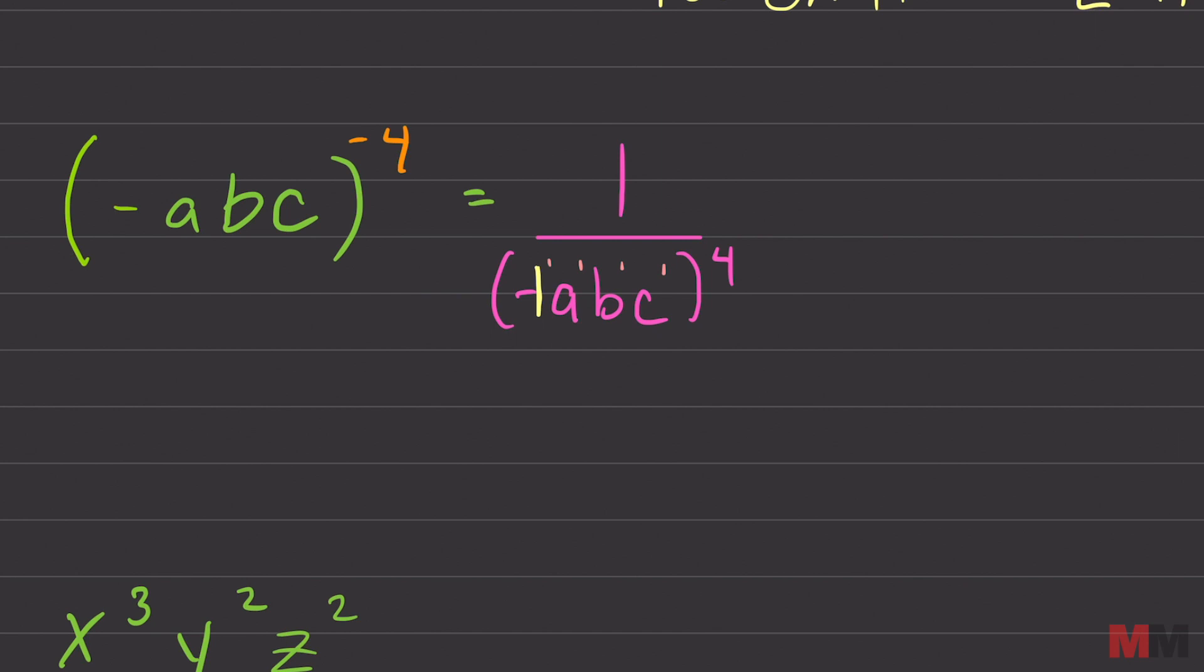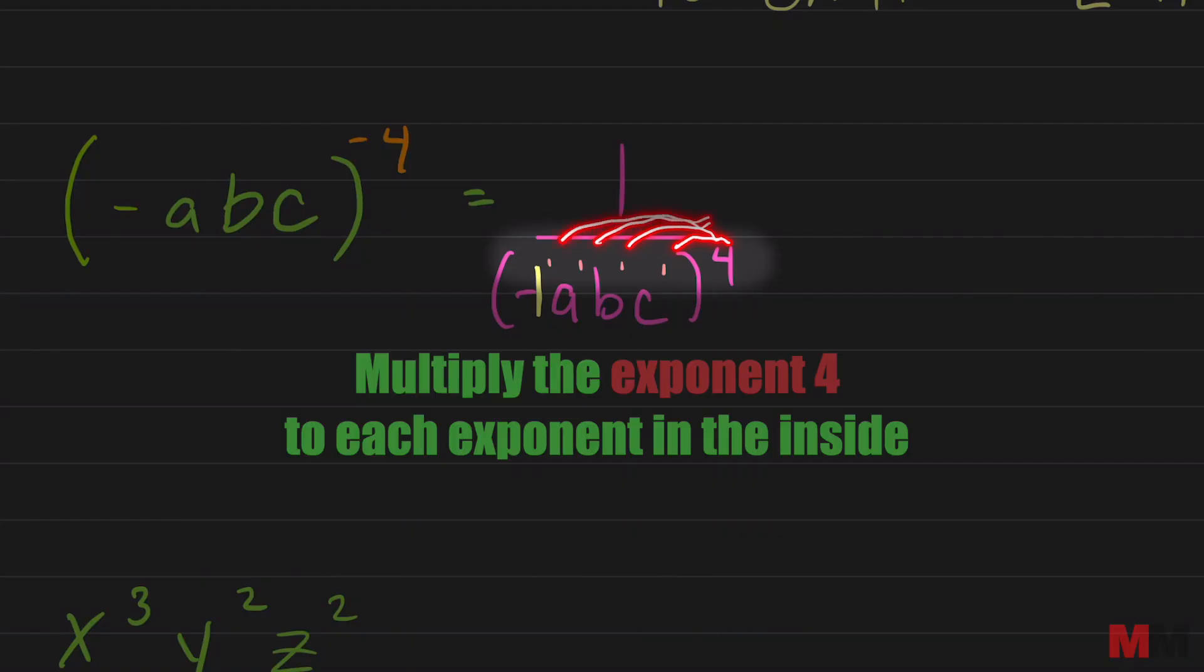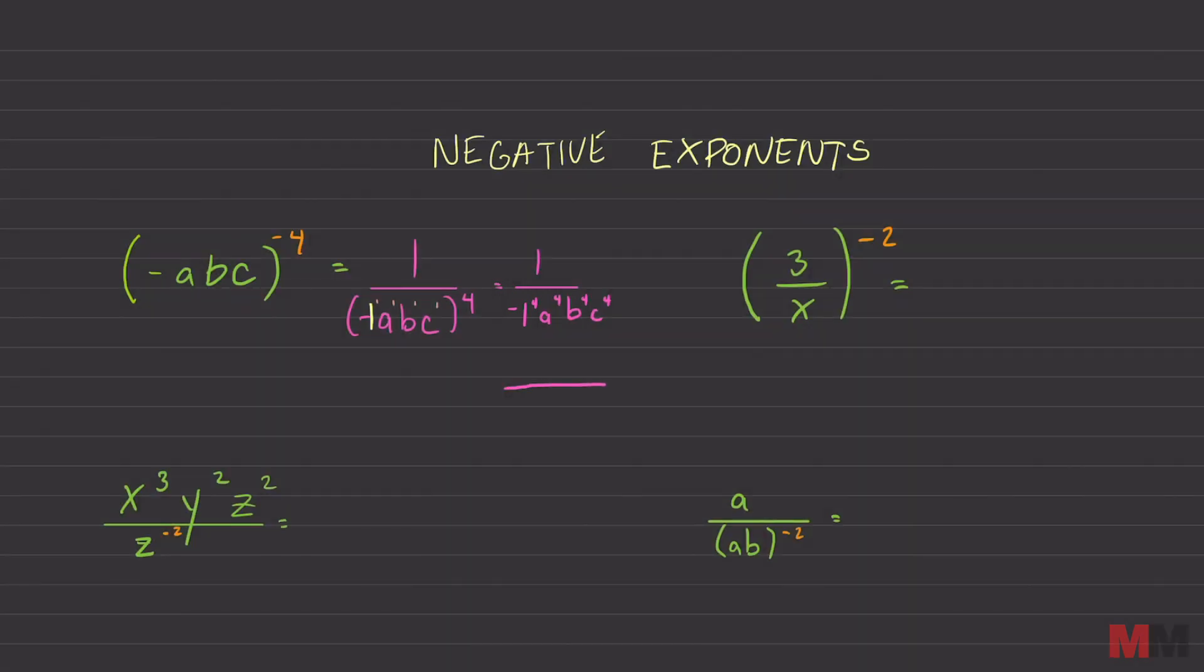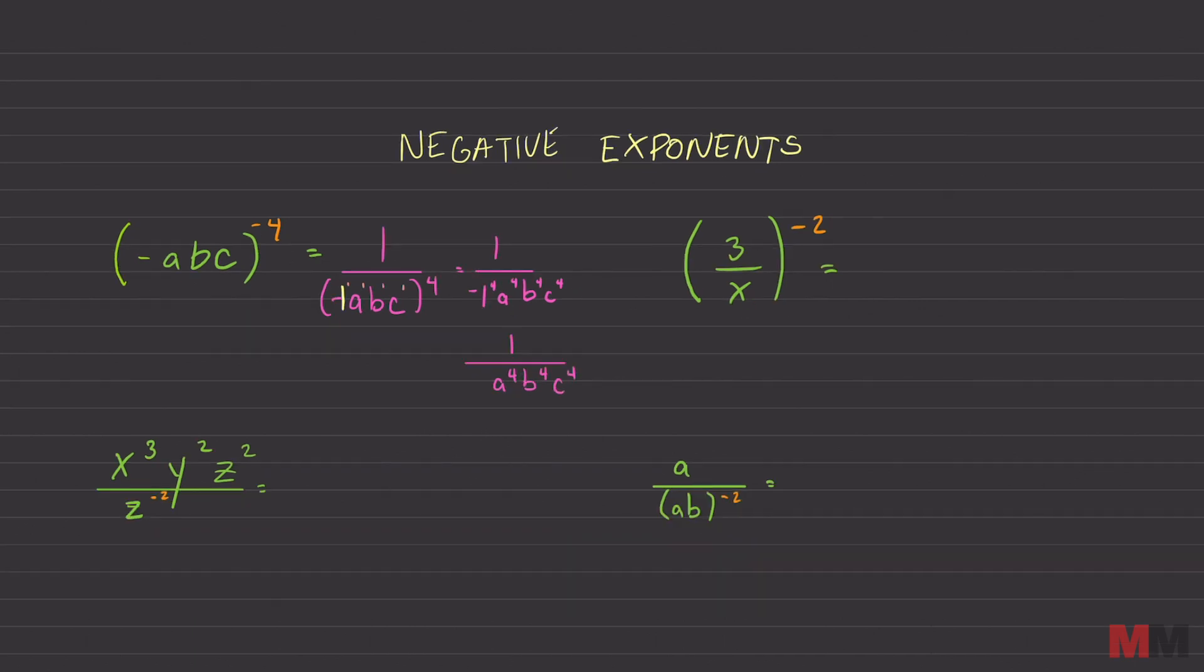But all you got to do is distribute that 4 to each one of those exponents to simplify it. So 1 on the top. Now that negative 1 will turn into the negative 1 to the 4th, a4, b4, and c4. Negative 1 to the 4th is just really 1. So we can write a 1, positive 1 right there. And none of these change, b4, c4. So you don't even have to write this one right there. Let's move to the second one.